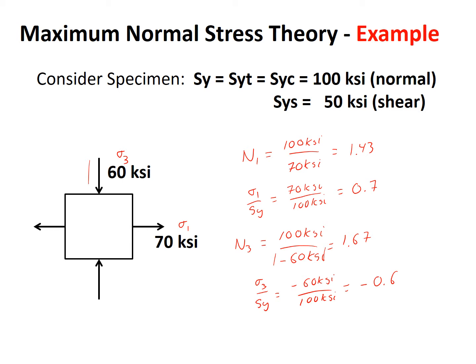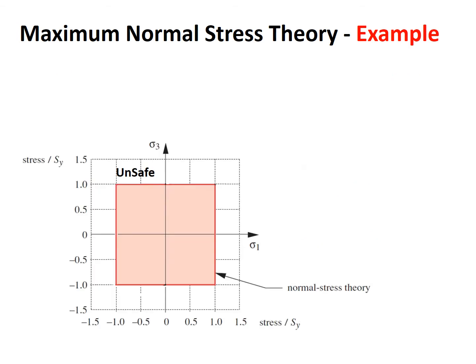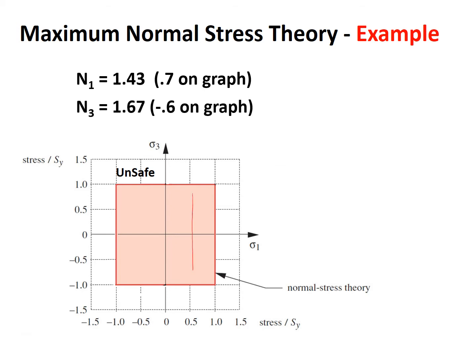On our graph showing stress ratios, N1 with a factor of safety of 1.43 corresponds to 0.7 on the graph. N3 with a factor of safety of 1.67 corresponds to negative 0.6 on the graph. It looks like we are safe — our factors of safety indicate we are inside the safe region. But are we indeed safe?